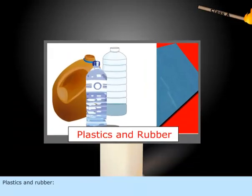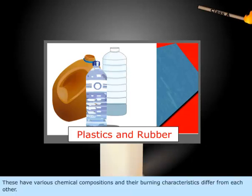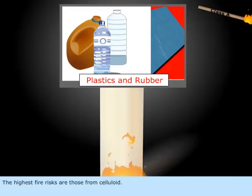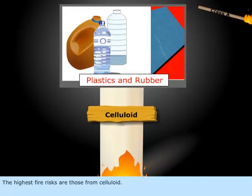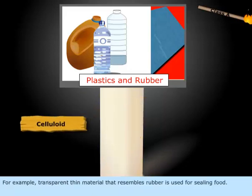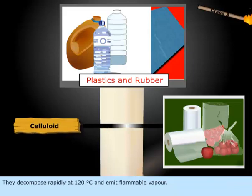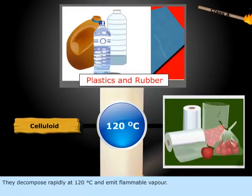Plastics and rubber. These have various chemical compositions, and their burning characteristics differ from each other. The highest fire risks are those from celluloid — for example, transparent, thin material that resembles rubber used for sealing food. They decompose rapidly at 120 degrees Celsius and emit flammable vapor.